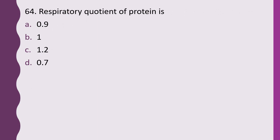Question 64. Respiratory quotient of protein is: 0.9, 1, 1.2, or 0.7. The correct answer is option A, 0.9.